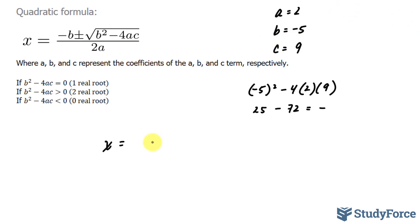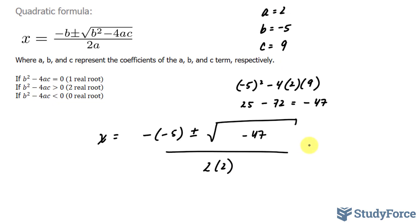B will be replaced with negative 5, so we have negative negative 5 plus minus, and we just found out what that was equal to. In fact, 25 minus 72 is minus 47 over 2 times 2. We will get two solutions here. The first solution will be 5 plus the square root of negative 47 over 4, and the second solution will be 5 minus the square root of negative 47 over 4.